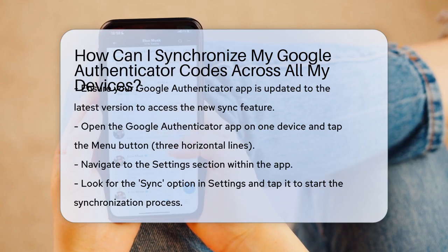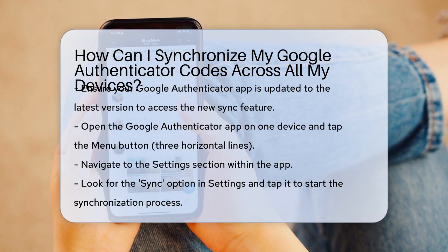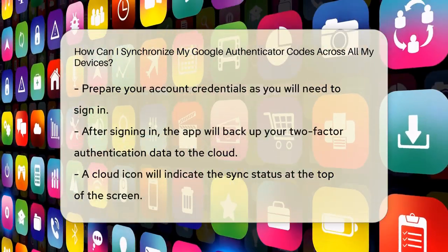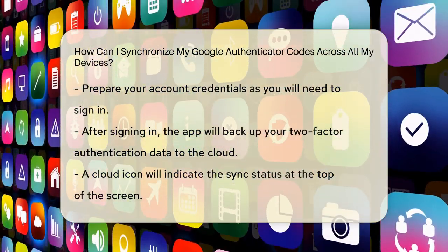First, open the Google Authenticator app on one of your devices. Tap the menu button, which looks like three horizontal lines. From there, navigate to the Settings section. In the Settings, look for an option labeled Sync. Tap on this to begin the synchronization process.